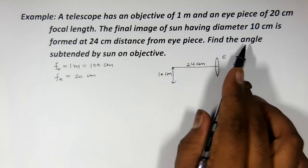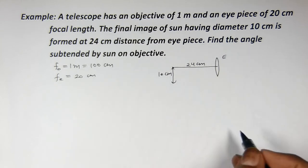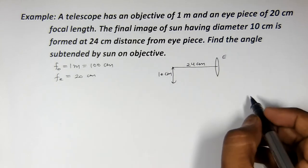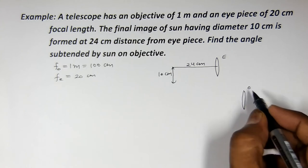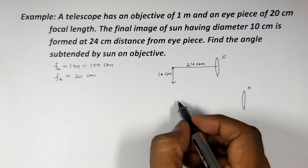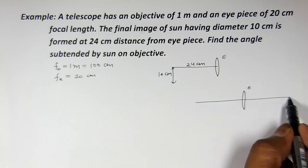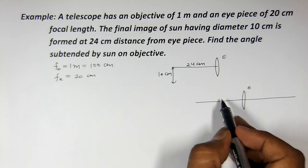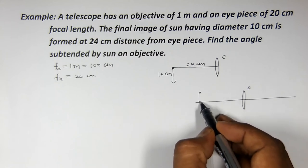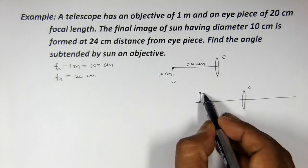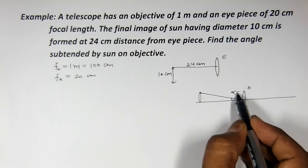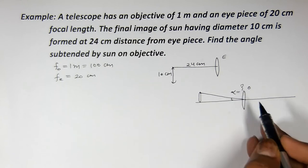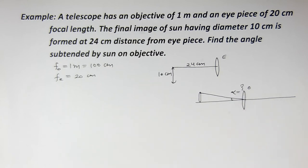Find the angle subtended by the sun on the objective. Objective par sun jo hai, wo kitna angle bana raha hai, wo humein find karna hai. Jaise agar sun hai yeh, to yeh jo angle banega, alpha, wo humein find karna hai.